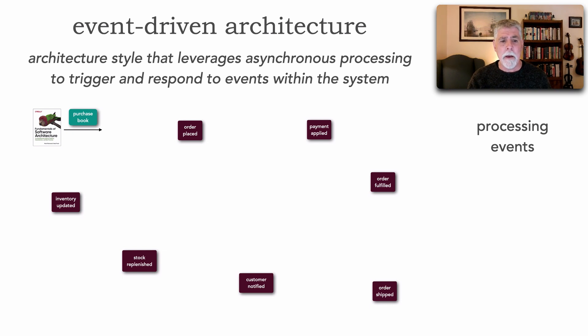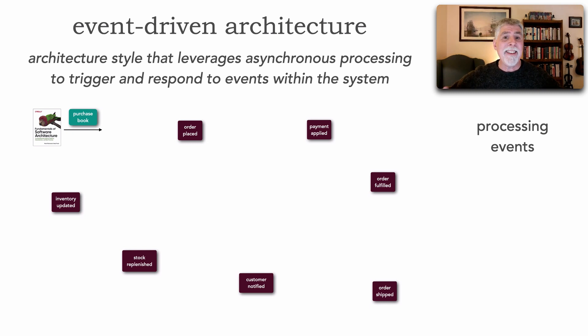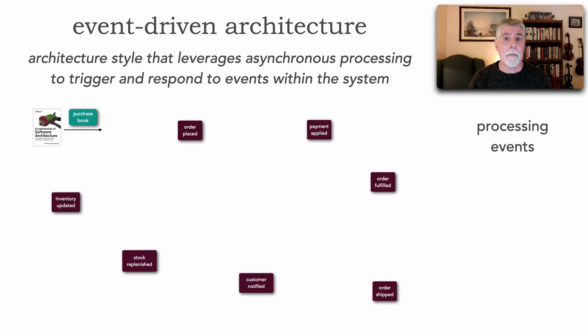For example: placing an order, maybe the customer notified, payment applied, inventory updated — these are things that are happening in the system. A good example of what we mean by events within an event-driven architecture.